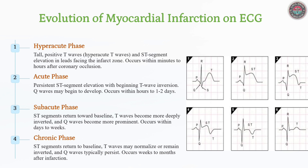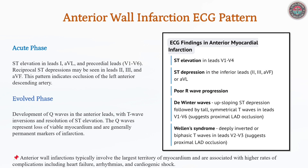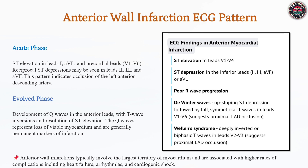As infarction evolves beyond the acute stage, ST segments gradually normalize while deep T-wave inversion reflects ongoing remodeling. In the chronic phase, persistent Q waves confirm irreversible damage, though T-wave changes may resolve. Persistent inversion may indicate residual ischemia requiring further evaluation. These ECG changes differentiate recent infarcts from prior cardiac events.